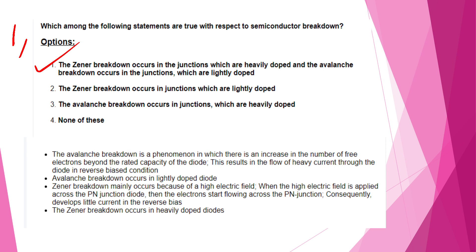Zener breakdown occurs in junctions which are heavily doped. Avalanche breakdown is a phenomenon in which there is an increase in the number of free electrons beyond the rated capacity of the diode, when the diode is in reverse biased condition and heavy current flows.